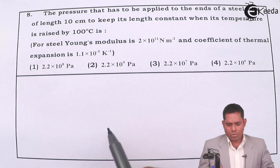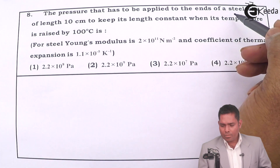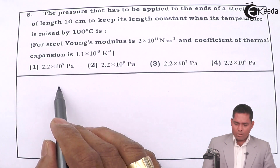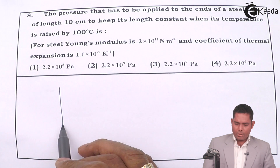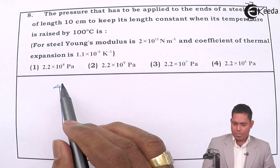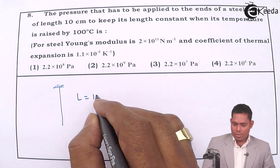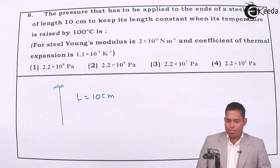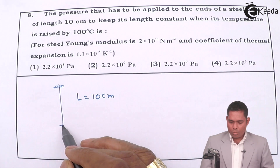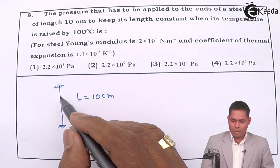Let us move to question number eight. The pressure that has to be applied to the ends of a steel wire of length 10 centimeters — pressure is applied at both ends.